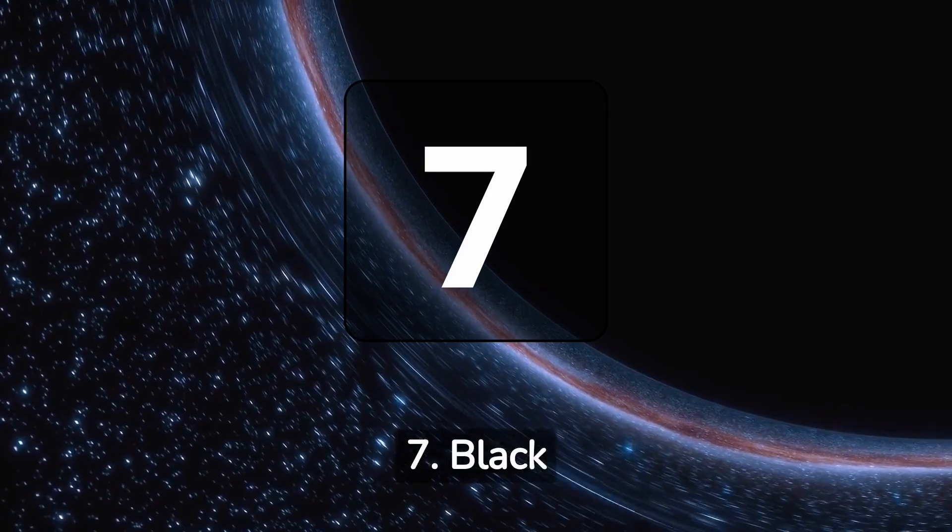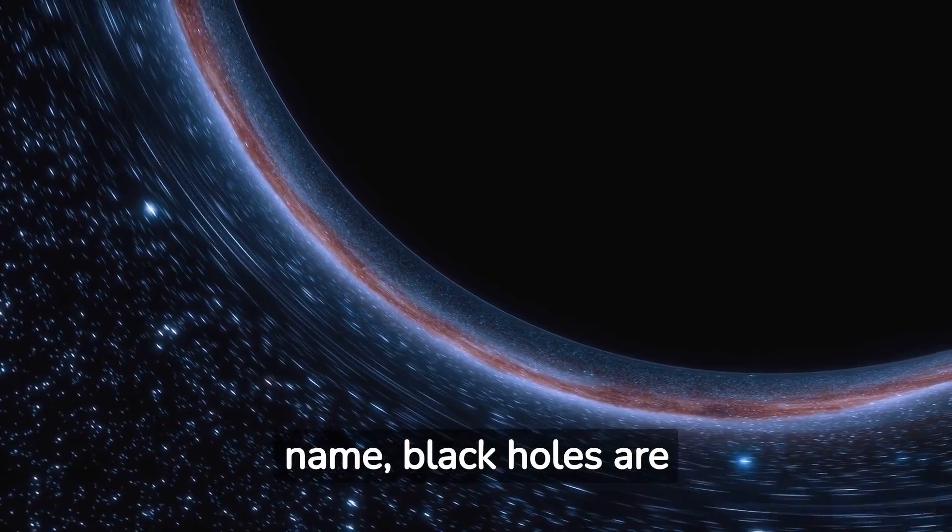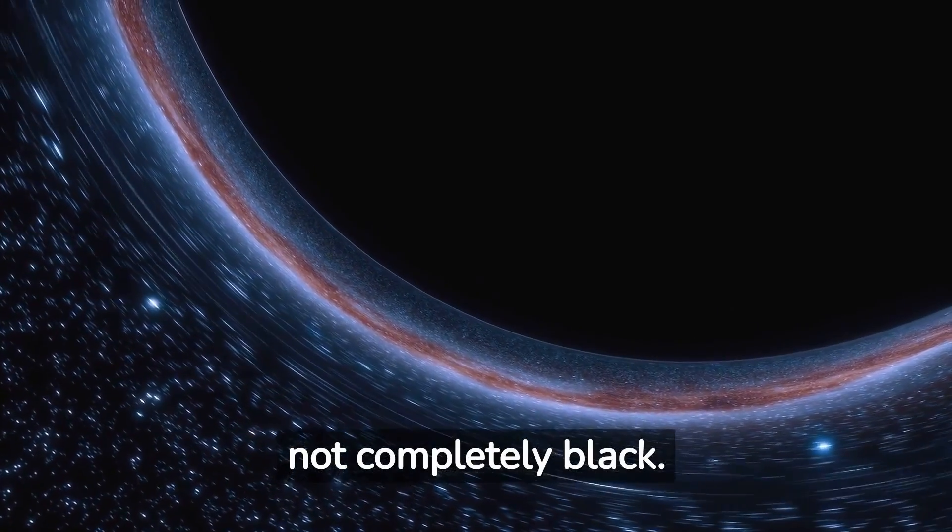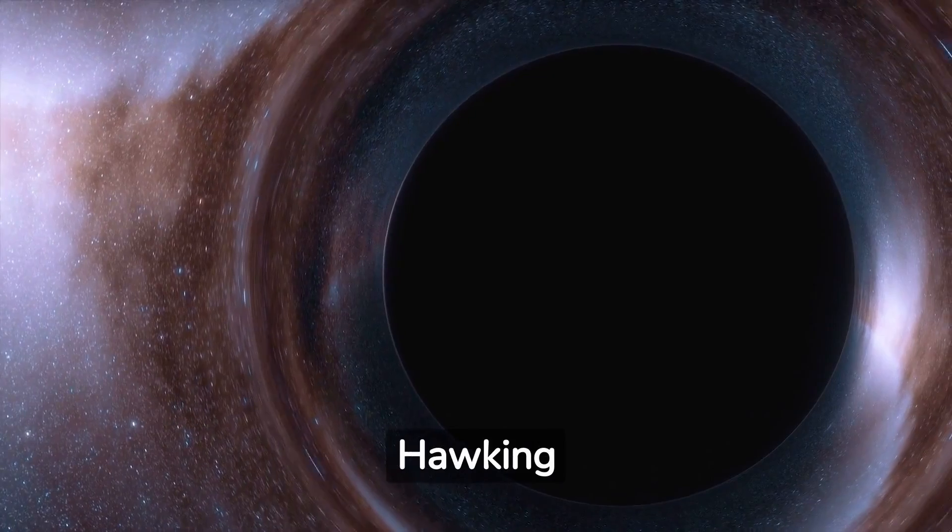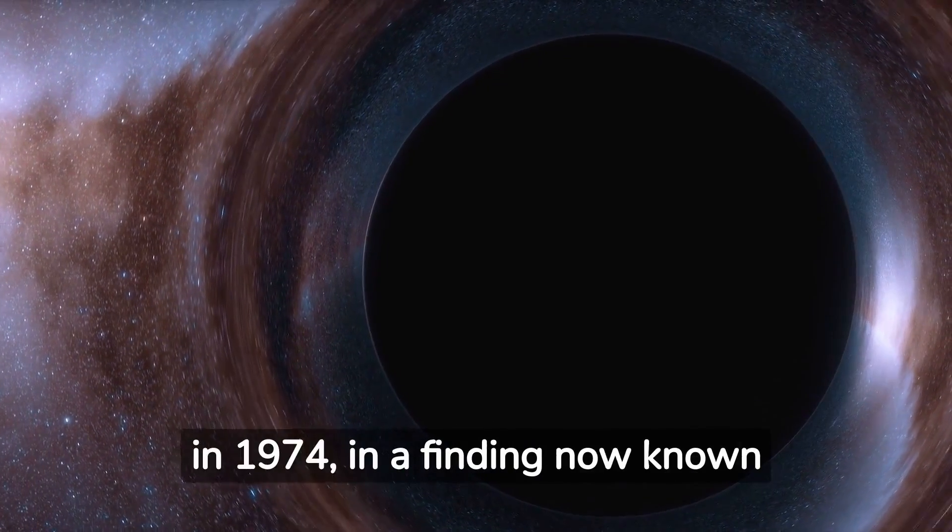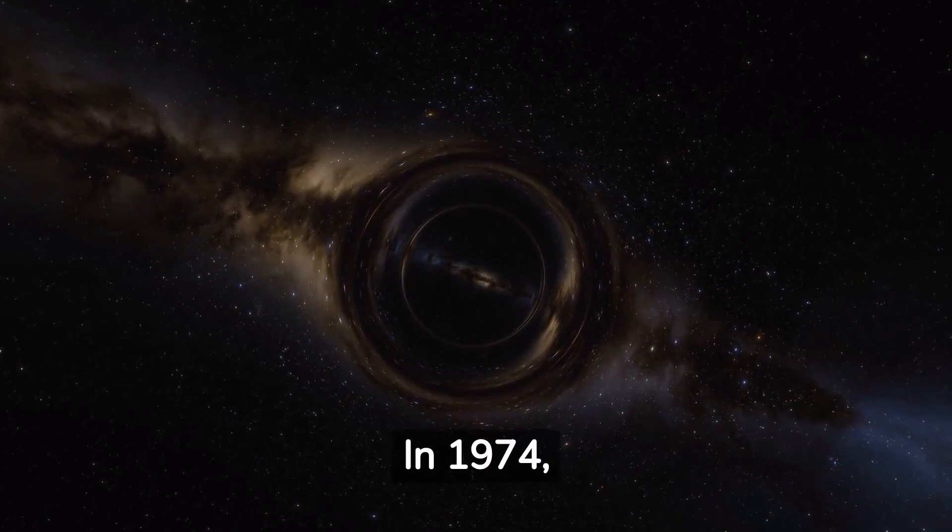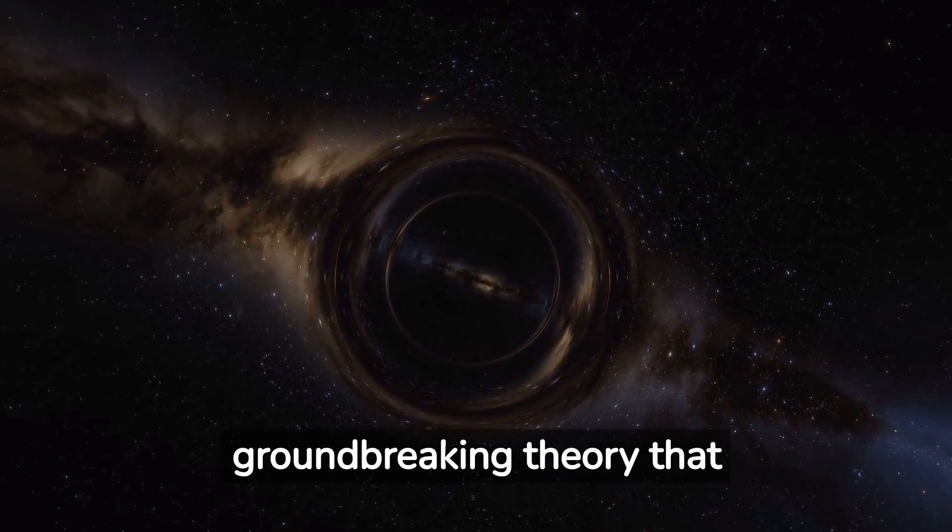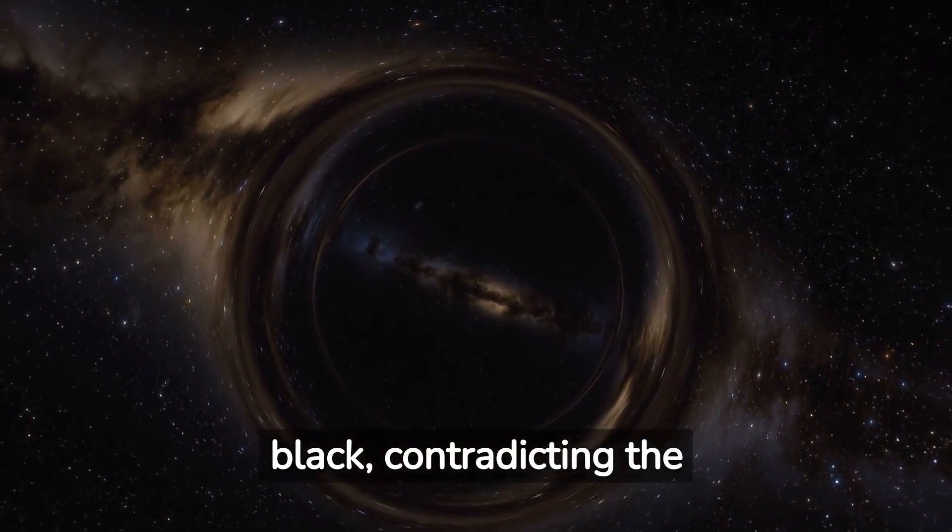Number 7: Black holes are not entirely black. Contrary to their name, black holes are not completely black. This captivating revelation was made by Stephen Hawking in 1974 in a finding now known as Hawking Radiation. In 1974, Stephen Hawking proposed a groundbreaking theory that black holes are not entirely black, contradicting the conventional viewpoint.